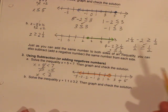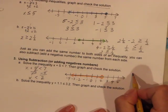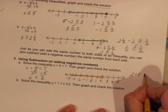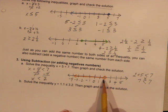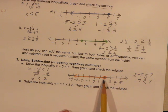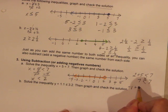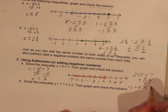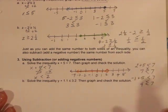To check, I substitute x = 2: 2 plus 5 is 7, and 7 is not less than 7 — correct, because the dot is open. The endpoint is excluded. I also try x = negative 1: negative 1 plus 5 is 4, and 4 is less than 7 — yes. So my graph is correct.